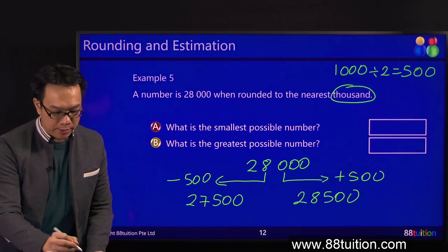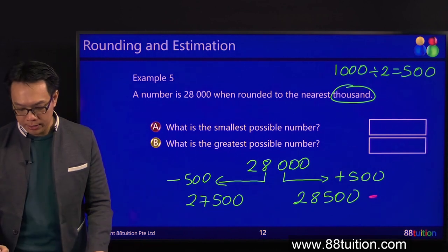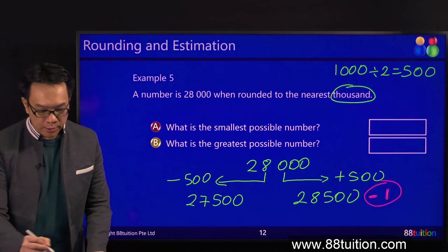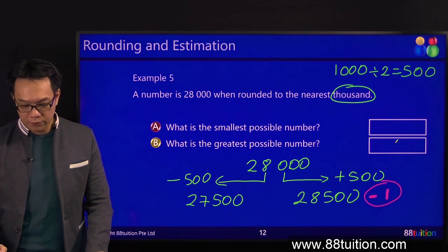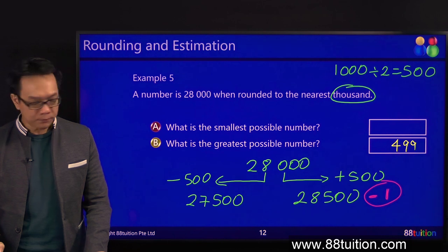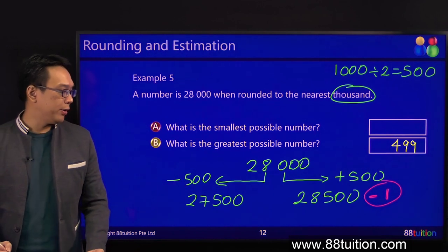What must you do? Yes. Many of you are shouting already. Minus 1. Standard step. So what do you have here? What is the answer? 500 minus 1 is 499. Right? 500 minus 1 is 499.